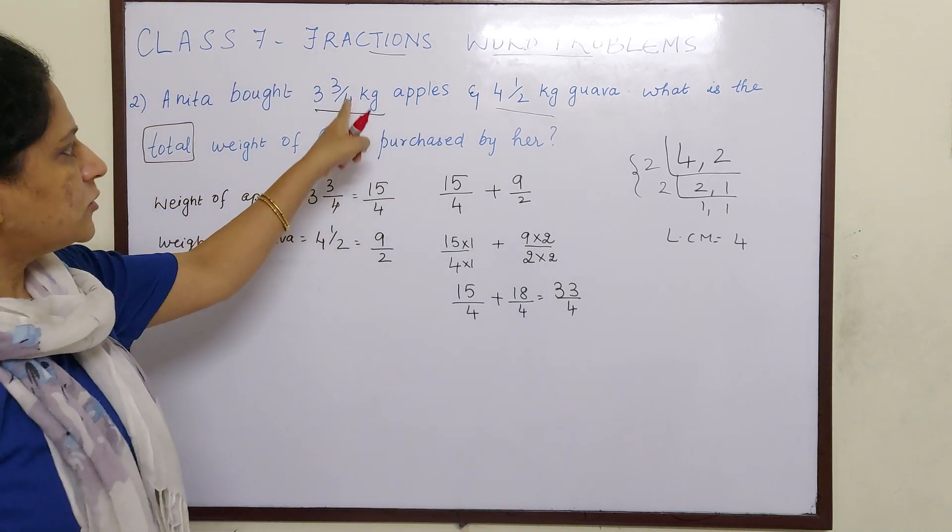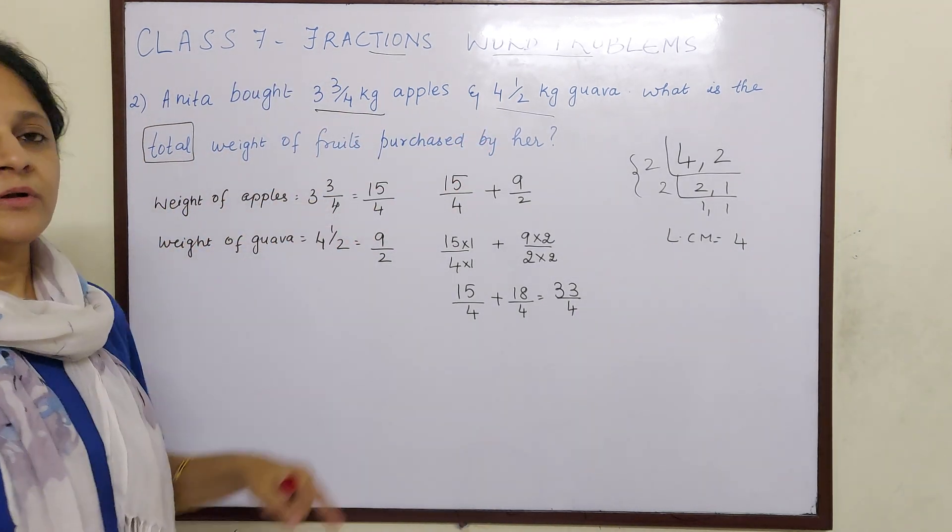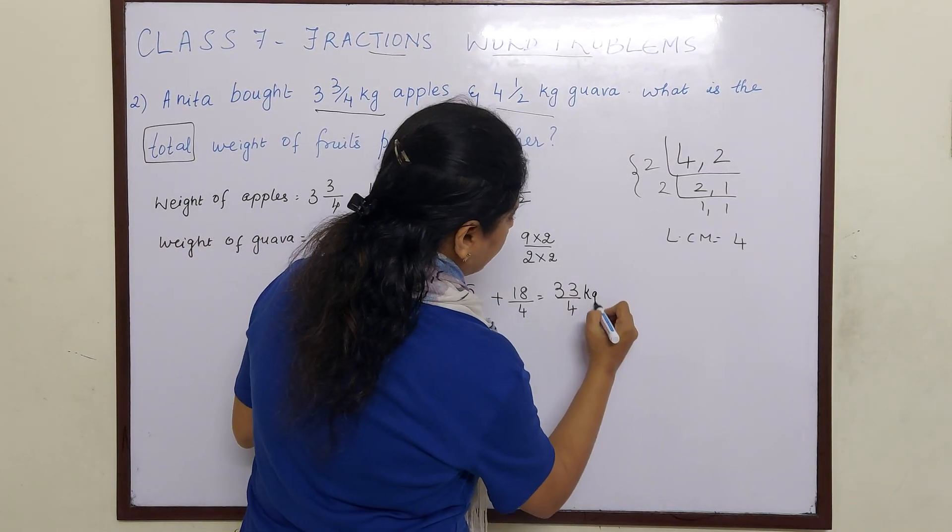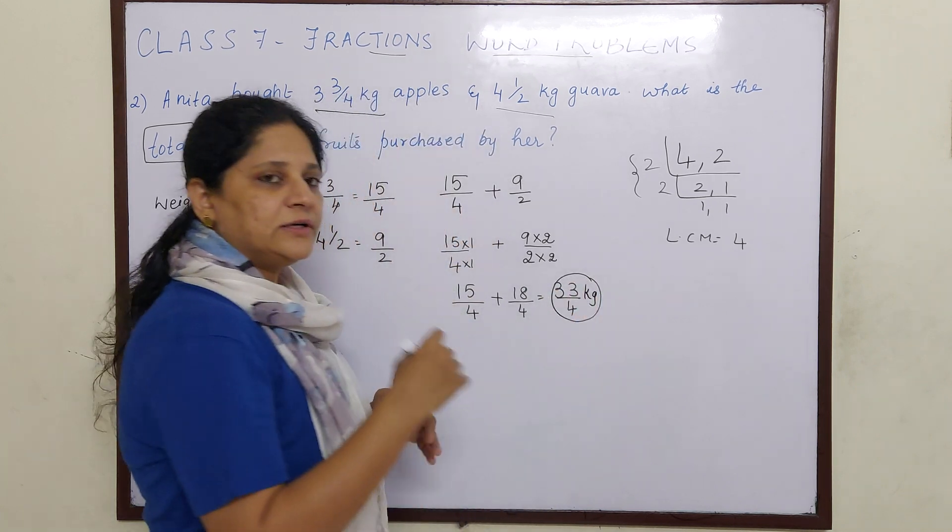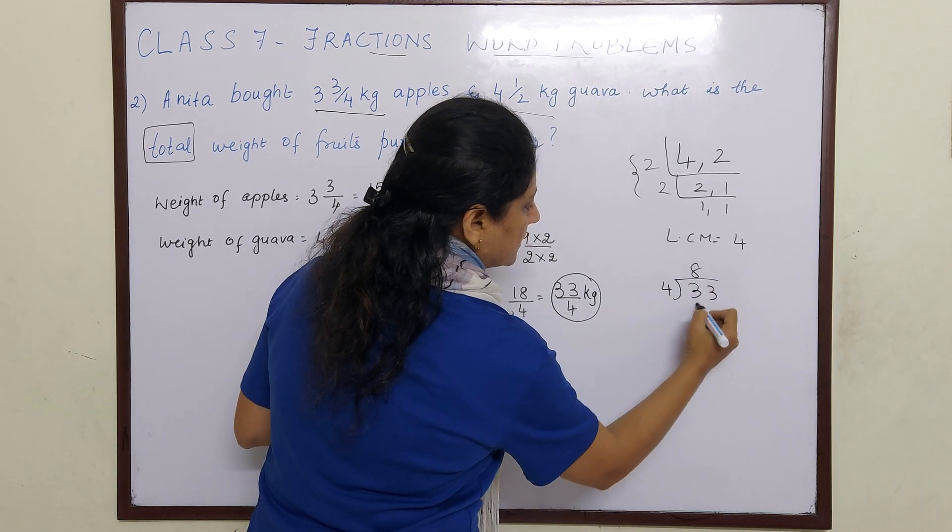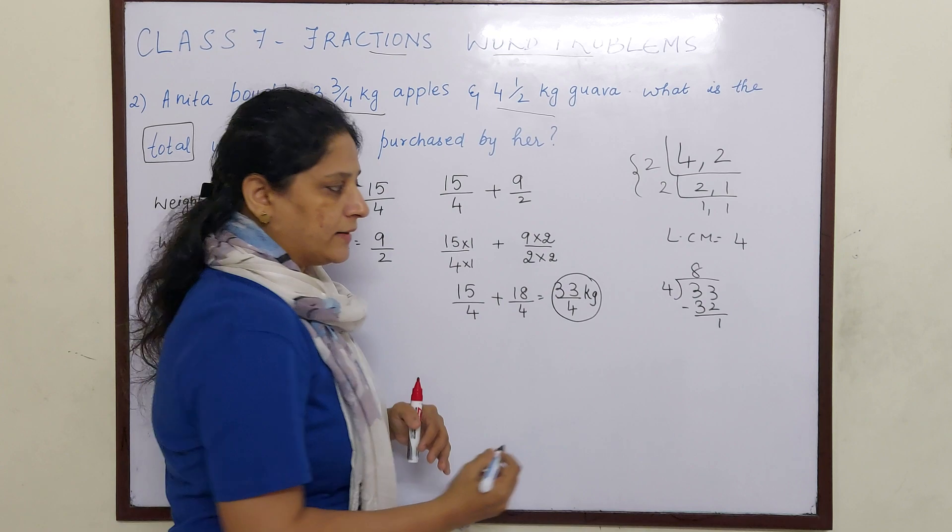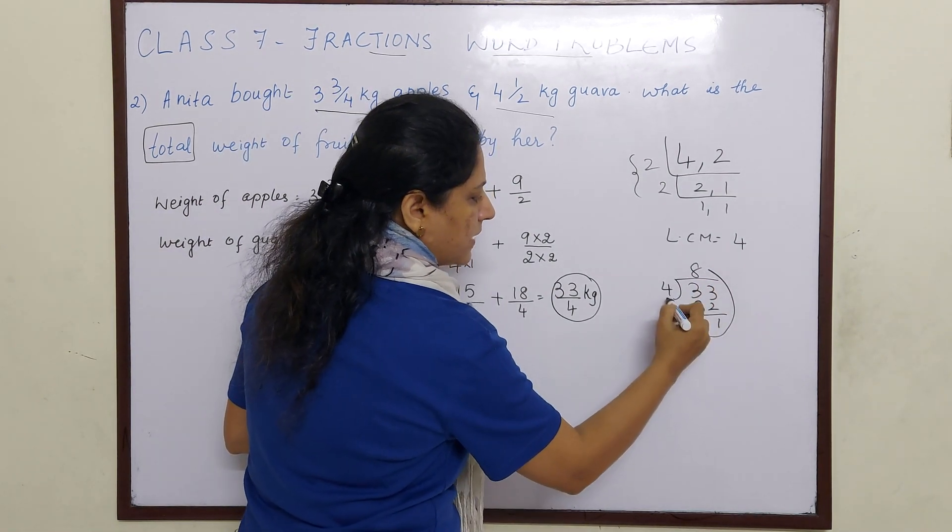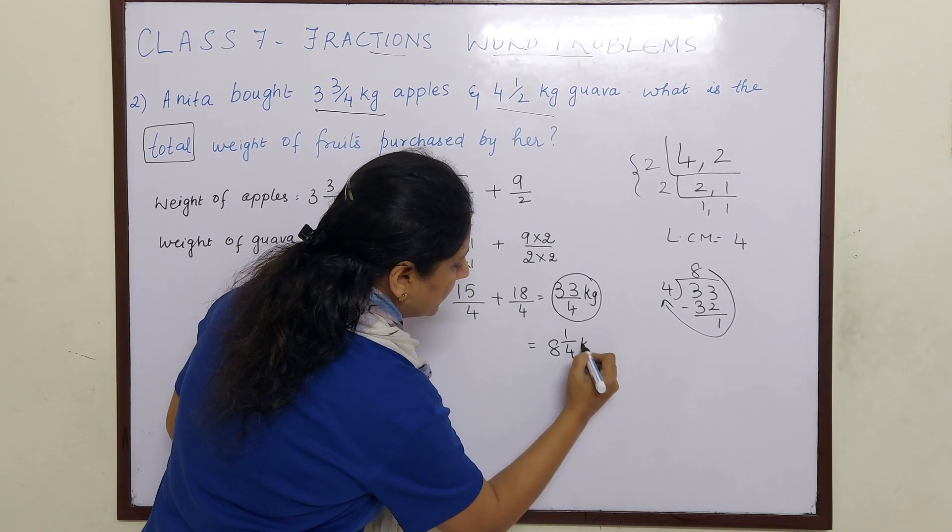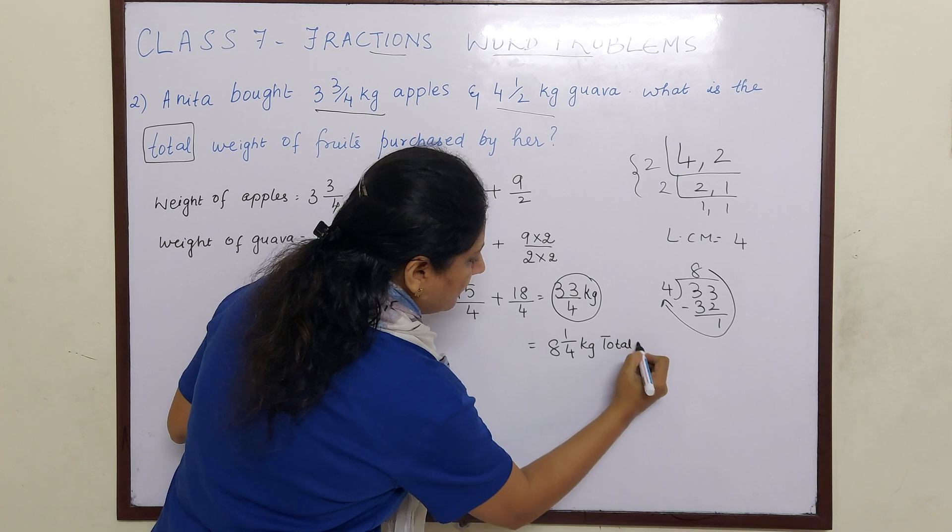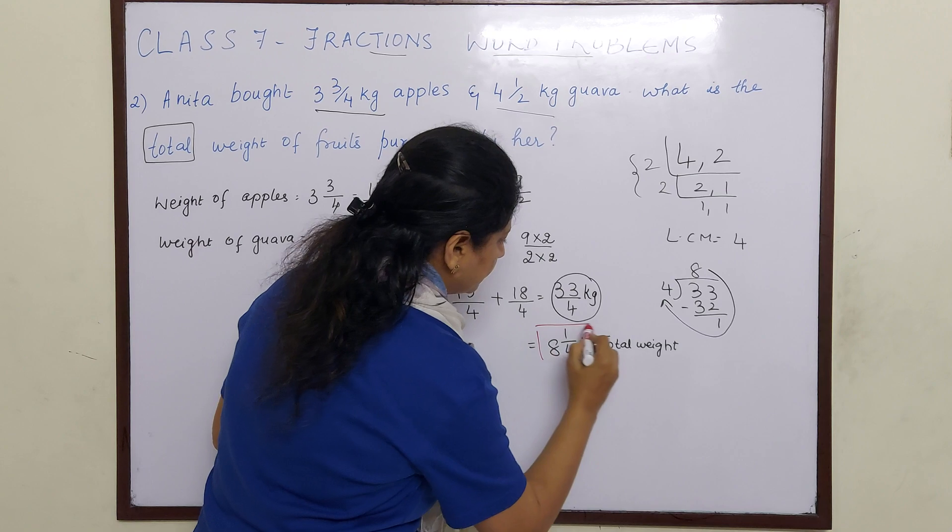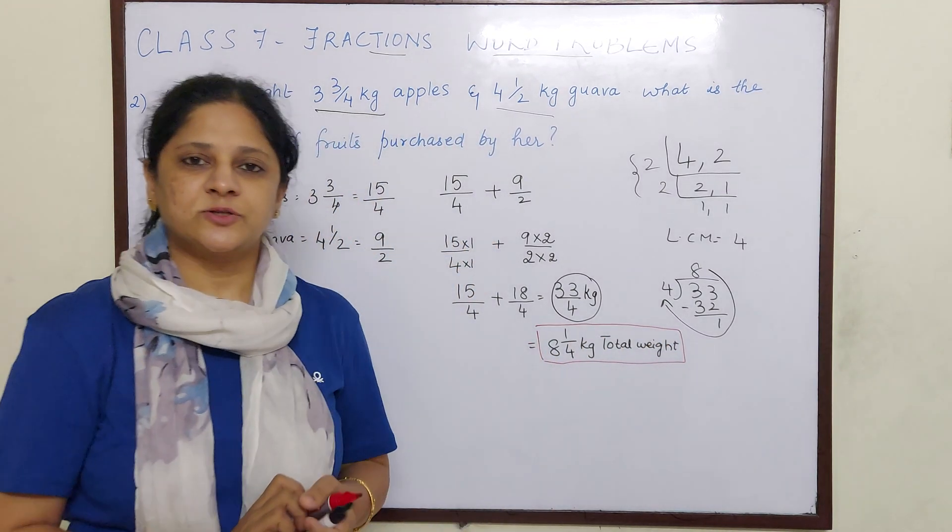Now children, because the question is in mixed fractions, so even the total weight of fruits we show it in mixed fraction. Though this is the answer, 33/4 kg is the total weight, we will turn it into mixed fraction. You can see 33 divided by 4 is 8, 4 times 8 is 32, remainder is 1. So 8 1/4 is your mixed fraction. So we will write here 8 1/4 kg is our total weight. This is our final answer.